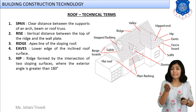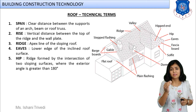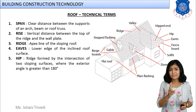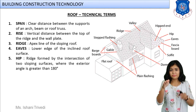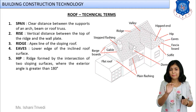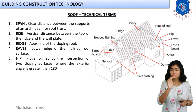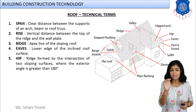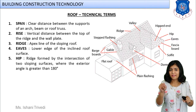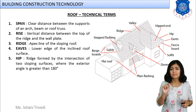The next parameter is hip. Spot that technical word in the image. Hip is the ridge formed by the intersection of two sloping surfaces. We have one sloping surface and another sloping surface, and the apex line formed by their intersection — where the exterior angle is almost 180 degrees — is known as hip.